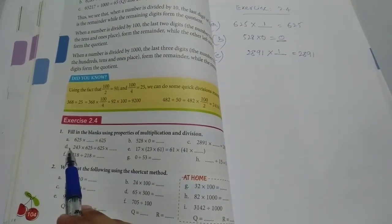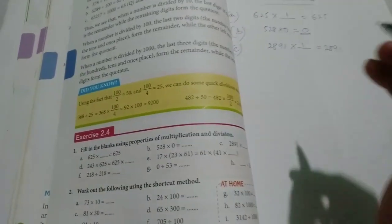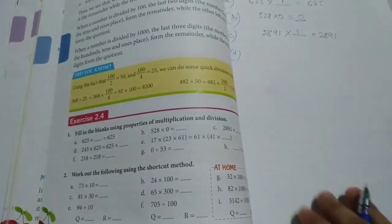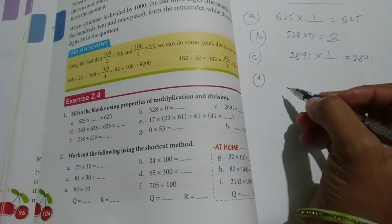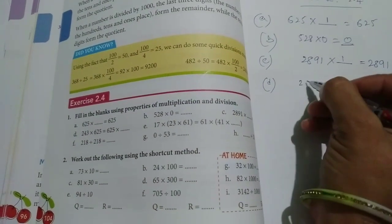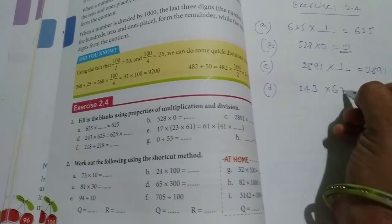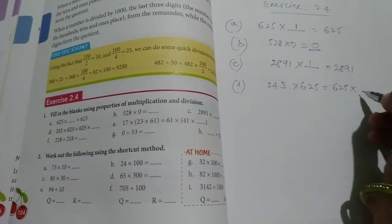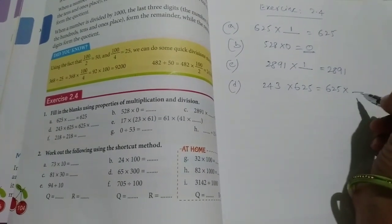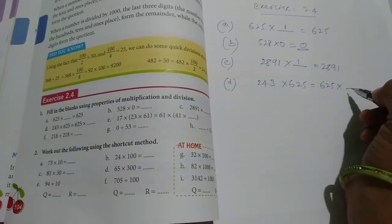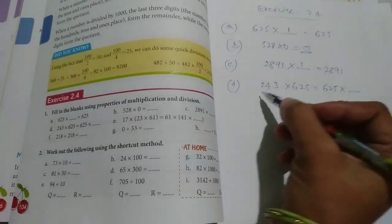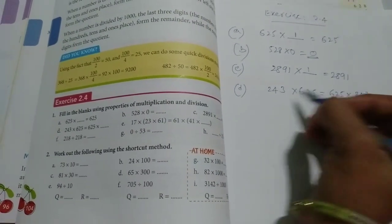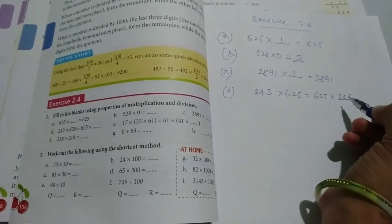So today let us start from the 4th one, that is problem number D. In this, 243 into 625 is equal to 625 into dash. What we have to write? 243 into 625 is equal to 625 into 243. A into B is equal to B into A, like that.